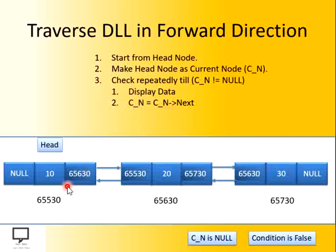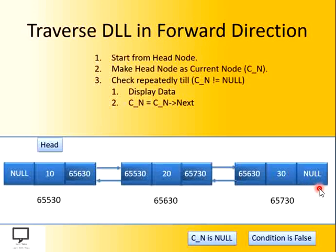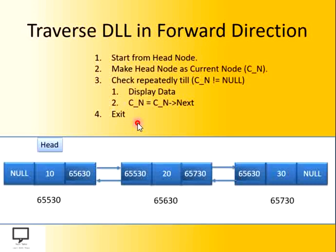So what have we done? We started from the head node, displayed 10, then moved to the next node in forward direction, displayed 20, then moved again to the next node, displayed 30, and now we are at the end of the list. At that position, we stop because this is the end of the list. In this way, we have done the traversal, and the last step is to exit from the loop — that is, exit from the forward direction traversal function. In this way, we have done the DLL traversal in forward direction.